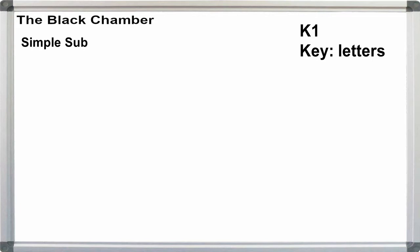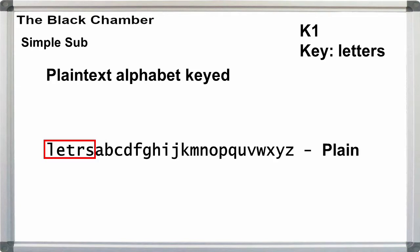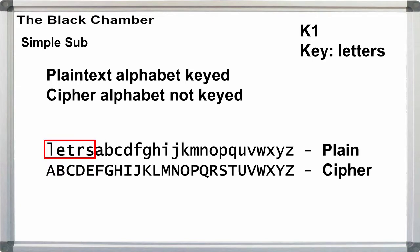Creating the K1 through K4 alphabets with keyword letters. For K1, the plaintext alphabet, upper line, is keyed. The cipher alphabet is not. The cipher alphabet is shifted so that no letter maps to itself.